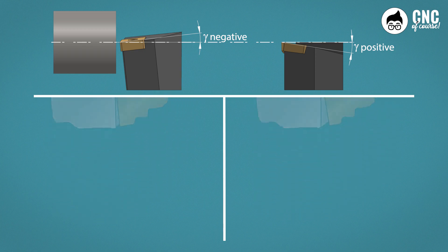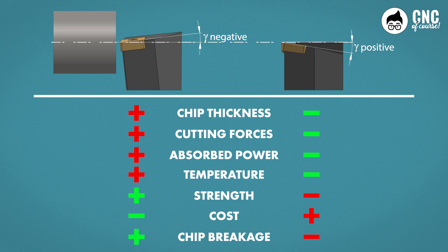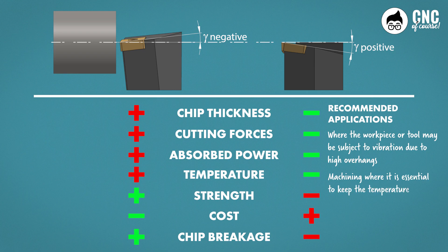So to sum up, when we have said the pros and cons of the two angles, we can say that positive tools generate less chip thickness, consequently less cutting effort and lower cutting power input and temperatures generated. On the other hand, the cutting edge of the insert is more delicate and less convenient economically, than the same insert that is double-sided. So, we will choose the positive insert in conditions where we need to avoid the occurrence of vibrations related to the overhang of the workpiece or tool. We will use the positive insert in certain types of finishing where it is very important to keep the stresses